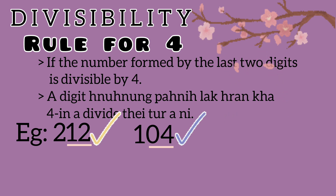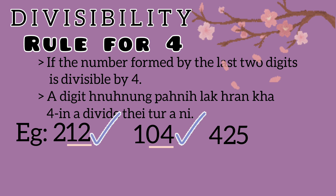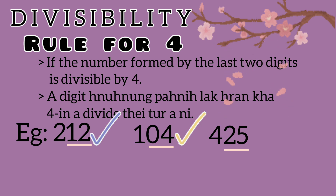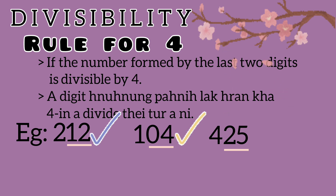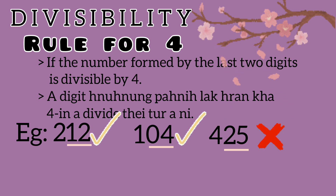Example: 425. The last 2 digits are 2 and 5 — that is 25. Is 25 divisible by 4? 25 is not divisible by 4. So 425 is not divisible by 4.